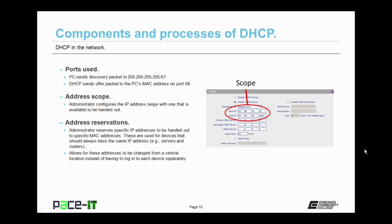Then there's the address scope. The address scope is the IP address range that the administrator configures on the DHCP server — it is the range of addresses that the DHCP server can hand out to individual nodes. There are also address reservations: administrator-configured reserved IP addresses. The administrator reserves specific IP addresses to be handed out to specific MAC addresses. These are used for devices that should always have the same IP address, such as servers and routers. This allows these addresses to be changed from a central location, instead of having to log into each device and change the IP configuration separately.